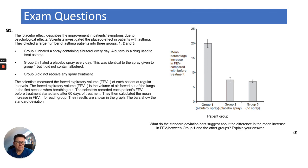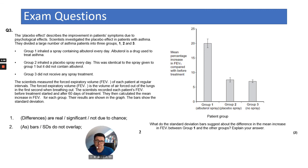And so it says, what do the standard deviation bars suggest about the difference in the mean increase in FEV1 between group one, which is the albuterol and other groups. And it says, explain your answer. Well, basically, you can see that group one, it says there was a much greater FEV1. And you can say that there was no overlap in the standard deviation. So there's a real significant. Well, you could say the differences are real or the differences are not due to chance as the bars, the SD, the standard deviation bars do not overlap.